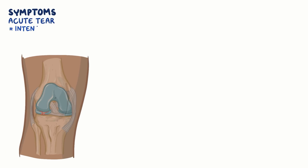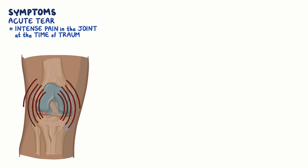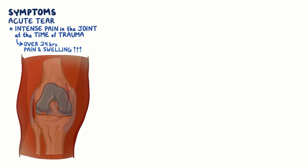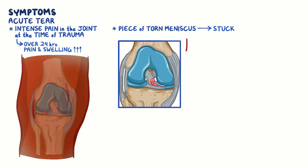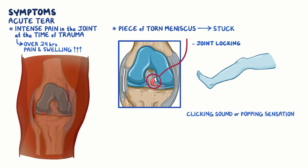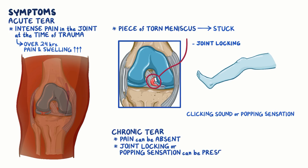In an acute tear, there can be intense pain in the joint at the time of trauma. Over the next 24 hours, joint pain and swelling increase gradually. In addition, a piece of the torn meniscus can get stuck between the condyles, restricting the joint's movement — called joint locking. This causes a clicking sound or a popping sensation when trying to extend the knee. In contrast to acute tears, pain in chronic tears can be absent. However, mechanical symptoms like joint locking or popping sensation can still be present.